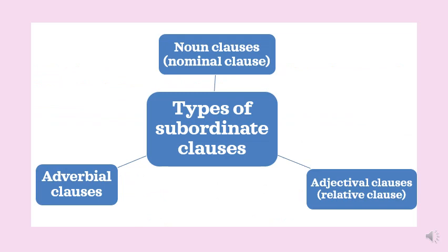We also mentioned that there are three types of subordinate clauses. We have noun clauses, also called nominal clauses. We also talked about adjectival clauses or relative clauses. And today we are tackling adverbial clauses.